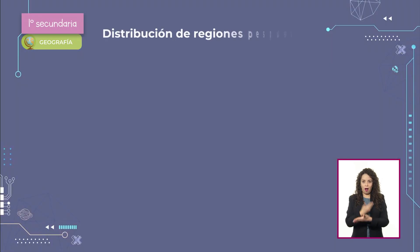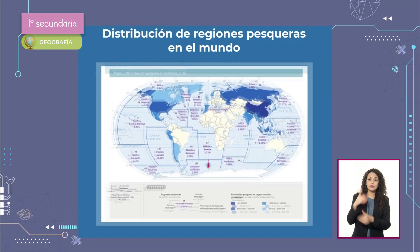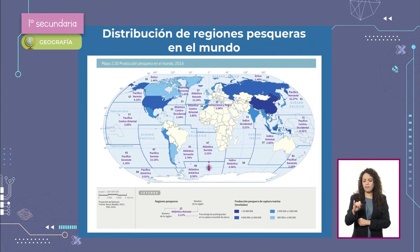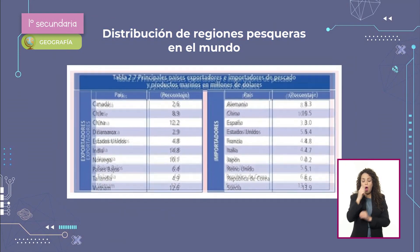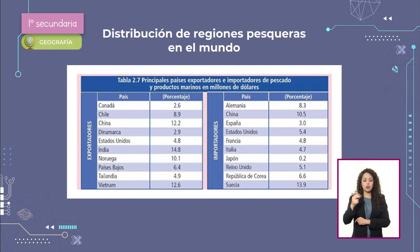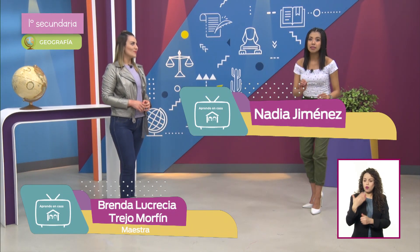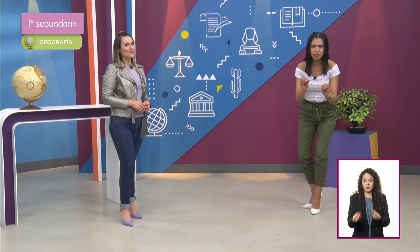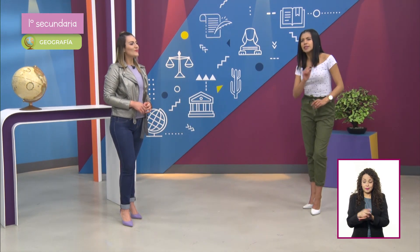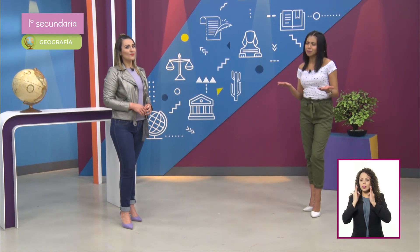Las principales regiones pesqueras se ubican en los océanos Pacífico y Atlántico. Algunas de las zonas más productivas coinciden con las corrientes frías de Kuroshibo y de Humboldt, frente a las costas orientales de Japón y las costas de Chile y Perú en Sudamérica. Debido a la pesca excesiva en alta mar, se ha provocado un desequilibrio en los ecosistemas y la desaparición de grandes bancos de peces. Ante esta situación, ¿se han buscado algunas alternativas que dañen menos?